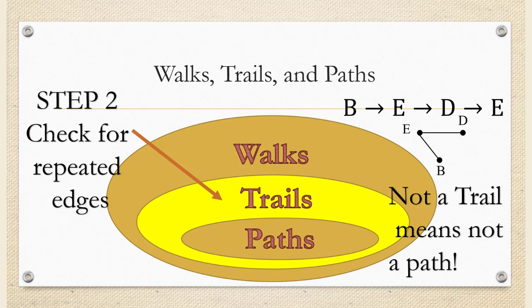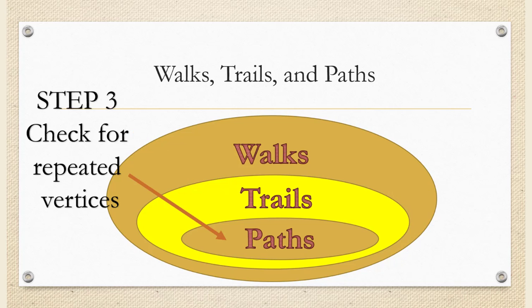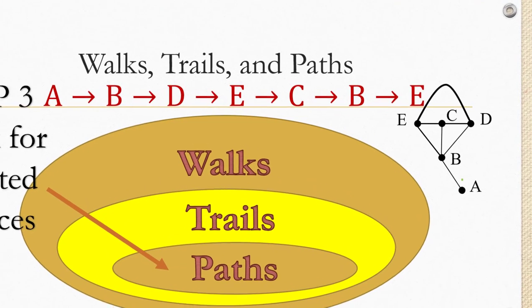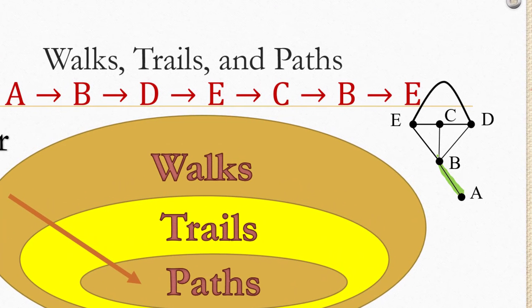Now let's suppose that you have a walk and you know it's a trail. Then you would then check to see if it's a path as well. So if we know we have a trail, it's possible we also have a path. The only thing that would stop us from having a path is repeated vertices. For example, let's consider A to B to D to E to C to B to E. Let's trace that out on our graph. So we're going to start at A and we're going to go to B, and then we're going to go from B to D, and then we're going to go from D over to E, and then we're going to go from E to C.